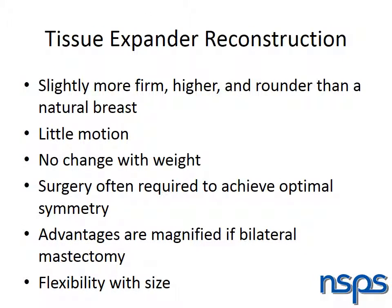Implants are slightly more firm, round, and full at the top when compared to a natural breast, and they do not move quite as much. Although implant-based reconstruction is the least natural-appearing breast reconstruction, this does not necessarily mean it creates an undesirable shape — many women prefer the shape of their implant to their natural breasts. However, most women will require surgery for symmetry on their opposite breasts to achieve optimal symmetry. Implants also do not change with weight or over time, so asymmetries may become more pronounced as the natural breast continues to age.